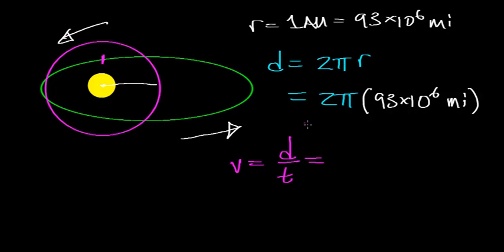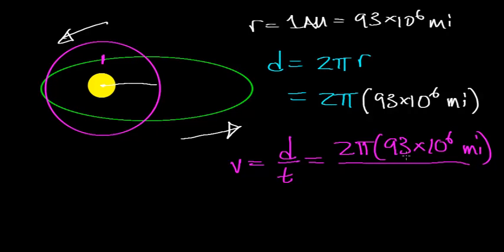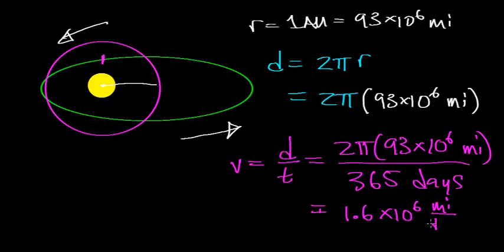Using this assumption, we know that the distance that the Earth is going to travel as it revolves around the Sun is going to equal 2π × 93 × 10^6 miles. And we know that it takes one Earth year, or 365 Earth days, to make one full revolution around the Sun. Now, 2π × 93 × 10^6 miles, divided by 365, is going to work out to be about 1.6 × 10^6 miles per day.